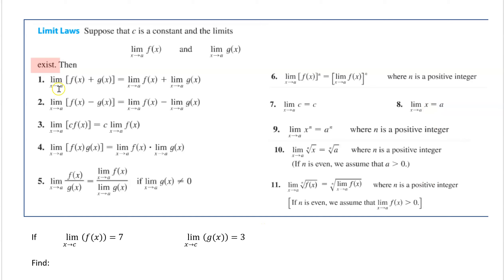If you take the limit of the sum of two functions, it's the same as the limit of each function individually added together. Same with the difference. You can pull a constant out of the limit because it's not affecting the limit — it's a constant. You can multiply, divide, use powers, use roots — there are a lot of different rules. But f(x) and g(x) both must exist before you can do any of these.